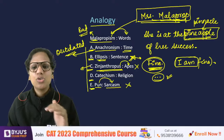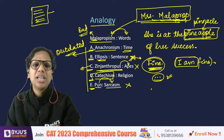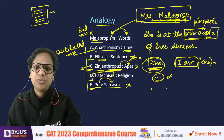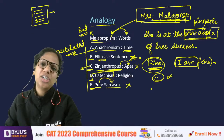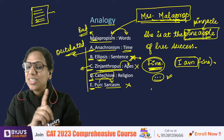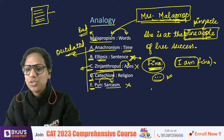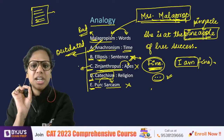Pun is not associated with sarcasm always, and it's not a mistake either. Catechism is a set of religious instructions used to teach religion. The answer is anachronism — something conspicuously old-fashioned or out of proper chronological order. The analogy is: malapropism is to words as anachronism is to time. Good that everyone got it — remember these words: malapropism, anachronism, catechism.